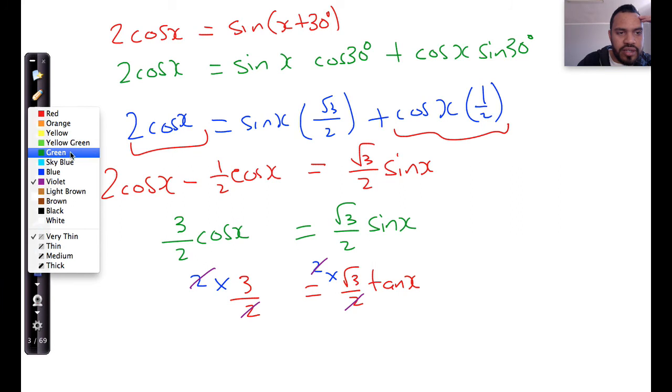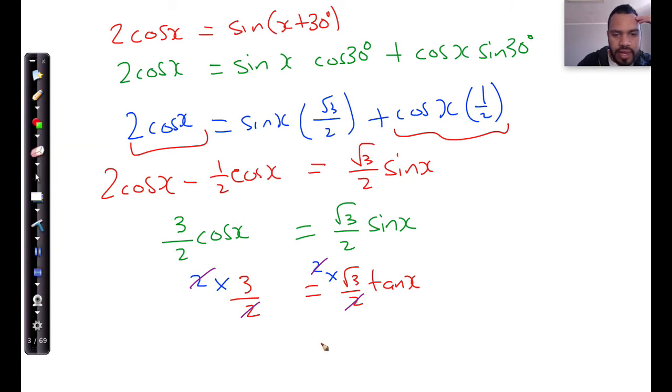And this leaves me with an equation that now reads tan x is equal to 3 divided by root 3. If I just want tan x, we solve for this. Because we saw that this whole thing was equivalent to this thing over here. So, we solve for tan x. So, I'll do that in the next slide.